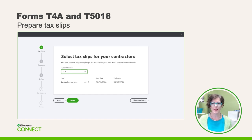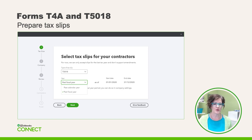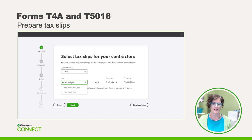Depending on your scenario, select either T4A or T5018 from the drop-down menu. In Annie's case, she would be selecting the T4A. If you choose the T4A, QBO will automatically select the date range to be the calendar year, so some of the heavy lifting is done for you. If you choose the T5018, you can choose either the past calendar year or past fiscal year — just keep it consistent with what you've done in the past.